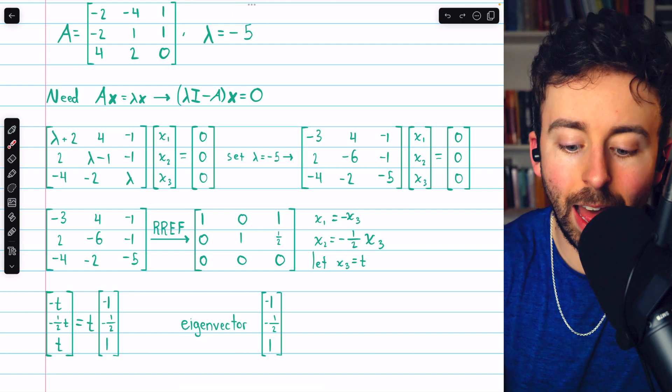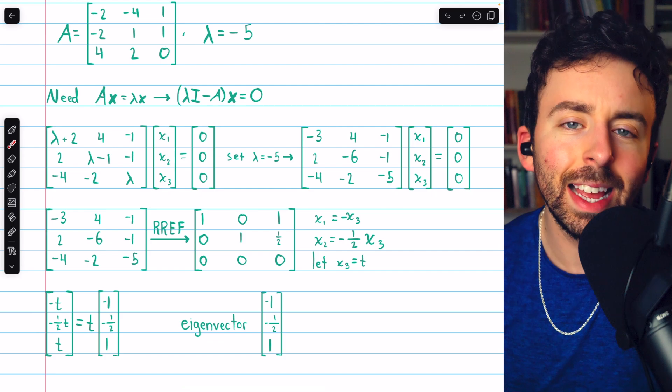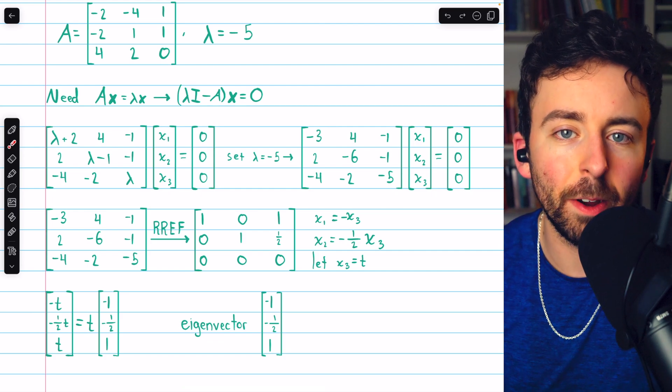If you want to see some examples where a single eigenvalue gives way to multiple linearly independent eigenvectors, links in the description, you can check that out.